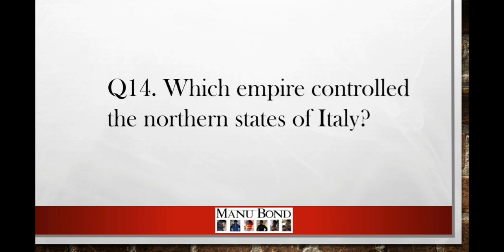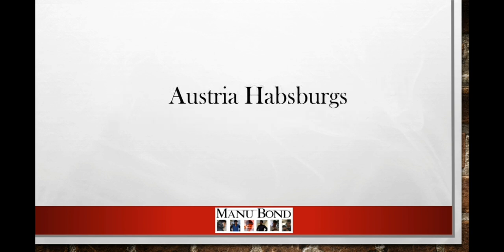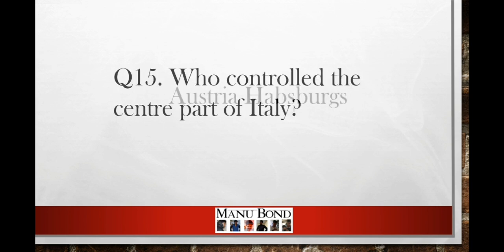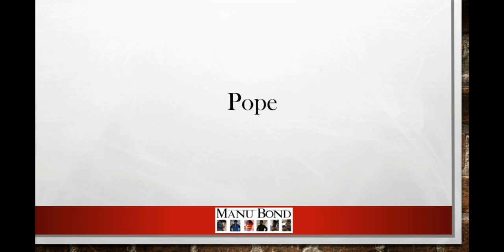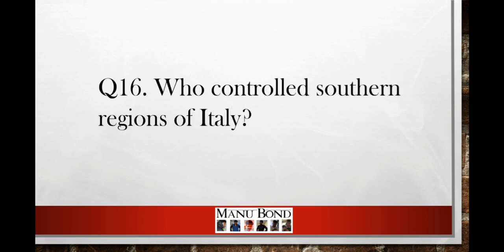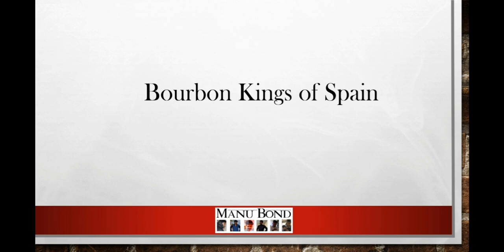Question number 14: Which Empire controlled the northern states of Italy? Answer: Austria Habsburgs. Question number 15: Who controlled the central part of Italy? Answer: The Pope. Question number 16: Who controlled the southern regions of Italy? Answer: Bourbon kings of Spain.